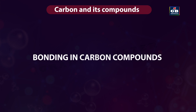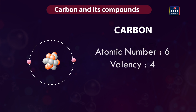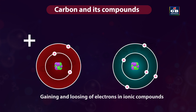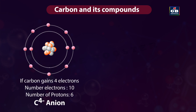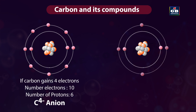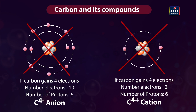Bonding in carbon compounds: the atomic number of carbon is 6. The outermost shell has 4 electrons, so its valency is 4. Generally, ionic compounds attain the noble gas configuration by either losing or gaining electrons, but carbon cannot do that. If carbon gains 4 electrons, it would be difficult for the nucleus with 6 protons to hold on to 10 electrons. If carbon has to lose 4 electrons, it would require a large amount of energy, turning it into a carbon cation with 6 protons holding on to just 2 electrons. So, losing and gaining of electrons does not work with carbon, and carbon cannot form ionic bonds.